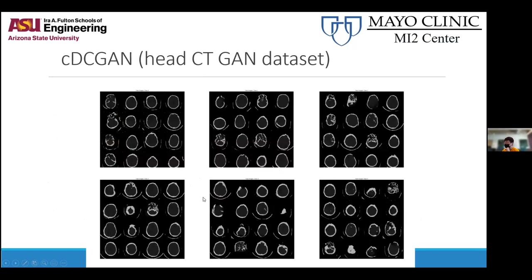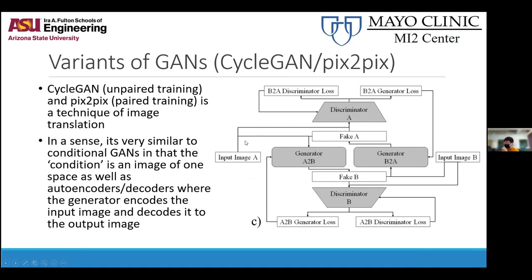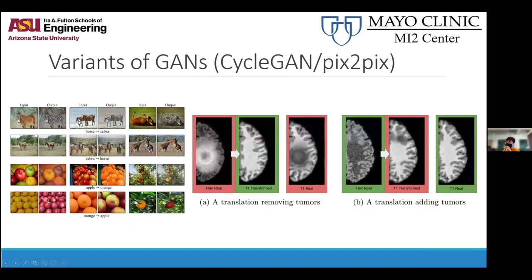This is one of the head CT examples I did — different hemorrhage classes and a normal class. Obviously there are some weird cut-off ones, but to a person it doesn't look half bad. Pix2Pix is just the A-to-B direction, and if you combine two Pix2Pixs together with identity and cycle losses, you get CycleGAN — pretty powerful stuff. Classic example: this brown horse turns into a zebra, which is cool.